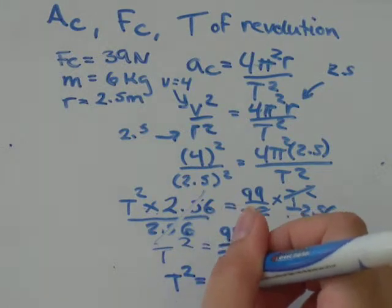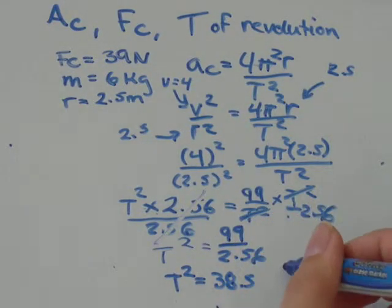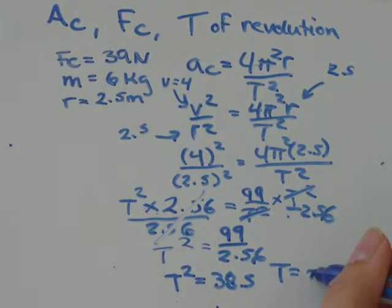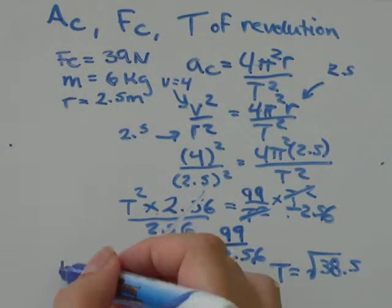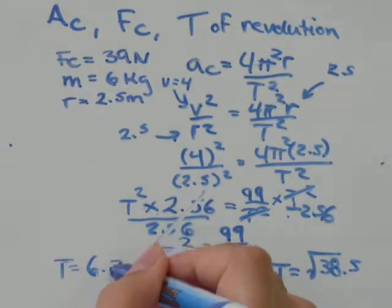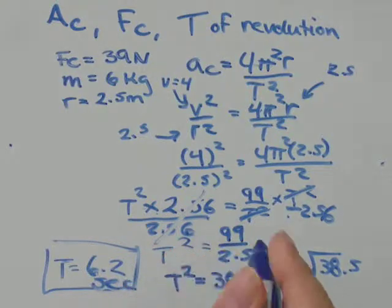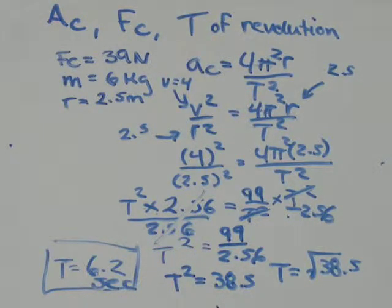So that's t squared is 38.5, so t would be equal to the square root of 38.5. The square root of 38.5 is about equal to 6.2. So your period is about equal to 6.2 seconds.